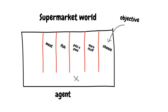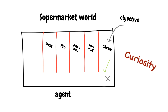Why? Because it gets a reward for seeing a new part of the supermarket — the pots and pans section. Moving back to the meat section, the agent gets no reward because it's already seen it. This reward for seeing new parts of the world is equivalent to rewarding curiosity in human beings.